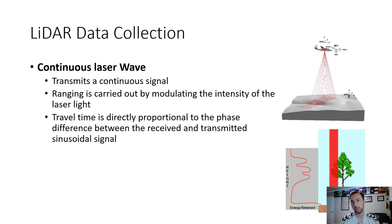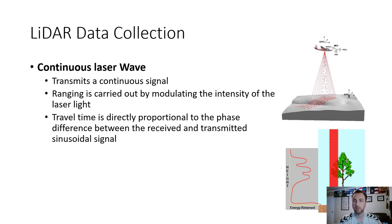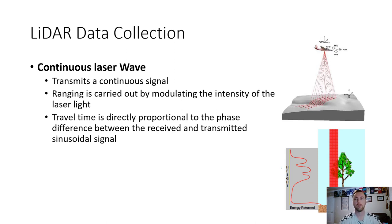The other type is a continuous laser wave, which transmits a single continuous laser beam that scans the earth rather than individual pulses. Ranging is carried out by modulating the intensity of the laser light. As the laser passes through a tree to the ground surface, the reduced intensity at the ground — combined with the first return at the treetop — tells the sensor how dense or tall a forest might be. The travel time is directly proportional to the phase difference between the received and transmitted sinusoidal signal.